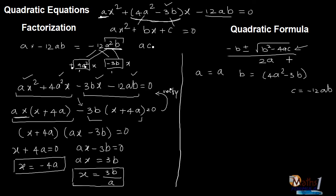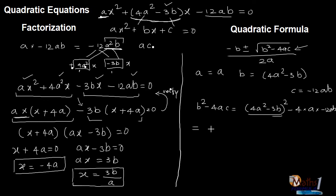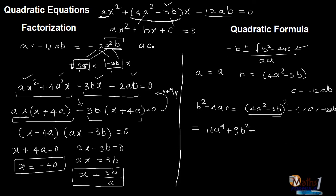We will first find out b² − 4ac and then put it under the square root. So b² − 4ac is (4a² − 3b)² whole square, minus 4 × a × (−12ab). This is an a minus b whole square expansion: a² which is (4a²)² = 16a⁴, plus b² which is (3b)² = 9b², then the midterm is minus 2 × 4a² × 3b.